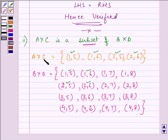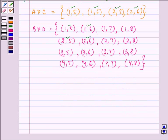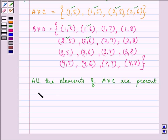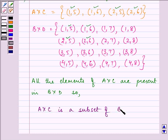So, all the elements of A × C are present in B × D. So, we can write A × C is a subset of B × D. So, this we have verified also and this brings us to the end of this session.